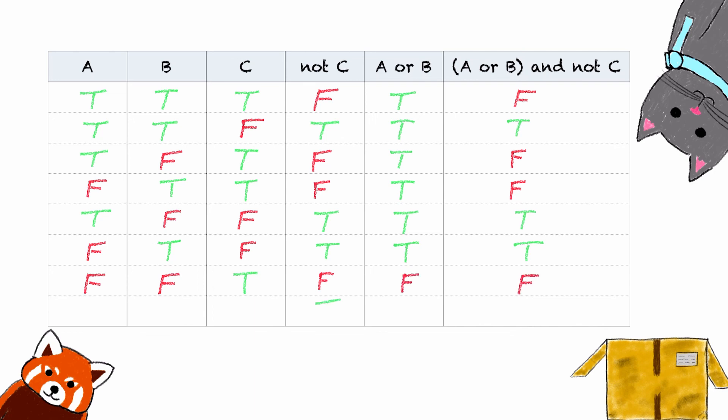Last but not least, consider the case where all three statements A, B, and C are false. By the same argument as the previous case, the disjunction A or B is false, resulting in the overall proposition being false. That was quite a marathon! If you managed to watch until now, please consider leaving us a like and subscribing to our channel. Thanks for watching and have a nice day.